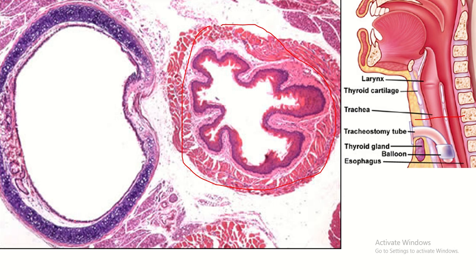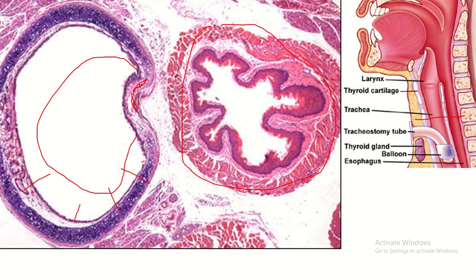The four layers of the trachea are: mucosa, submucosa, cartilaginous layer, and adventitia. The cartilaginous layer contains C-shaped hyaline cartilage. The cap of the C is covered by the trachealis muscle, which is made of smooth muscle. Contraction of the trachealis muscle reduces the diameter of the trachea, and relaxation increases the diameter of the trachea.